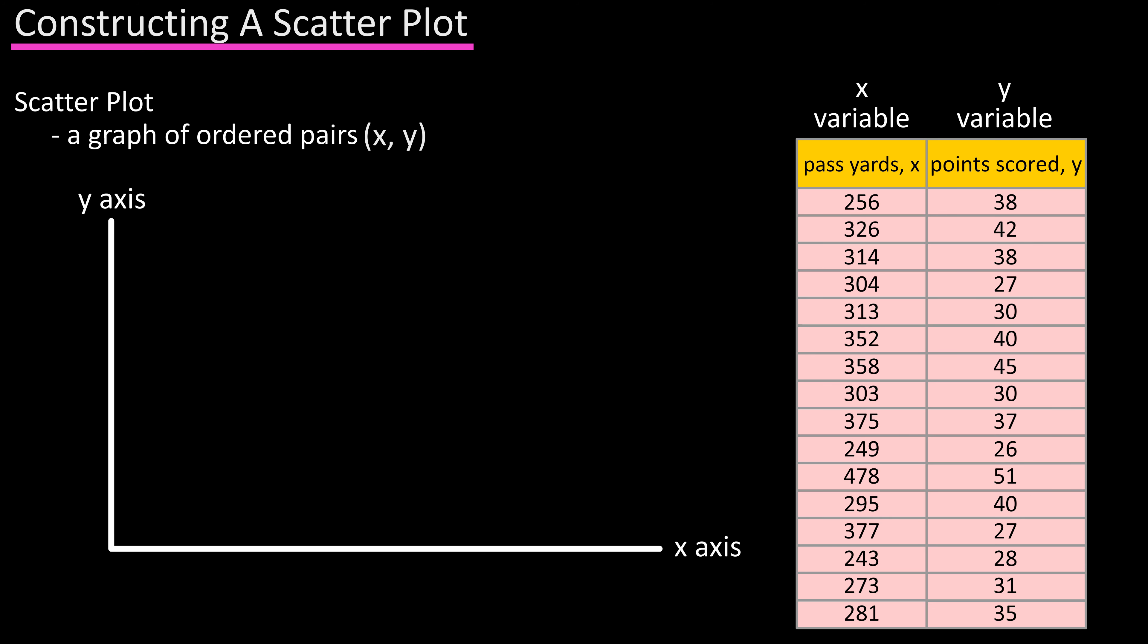Start by drawing an x and y axis. Label the x-axis as passing yards and the y-axis as points scored. Next, from the table find the highest value in the table for x, which is 478.